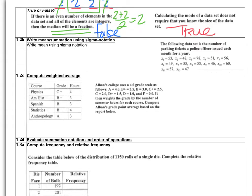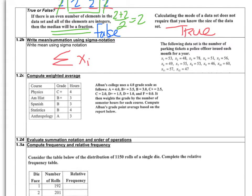Learning Objective 1.2b asks us to write the mean using summation notation. With the parking ticket data, we want to sum all the x values. Write the sigma symbol, then x sub i, with i starting at 1 and ending at 12, since there are 12 months in consecutive order. This sigma expression gives the total. To find the average, divide that sum by 12 elements.